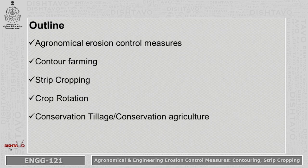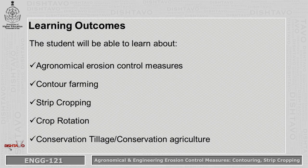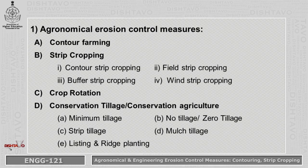The outline of this module includes Agronomical Erosion Control Measures, Contour Farming, Strip Cropping, Crop Rotation, and Conservation Tillage or Conservation Agriculture. At the end of this module, students will be able to learn about these different agronomical erosion control measures.